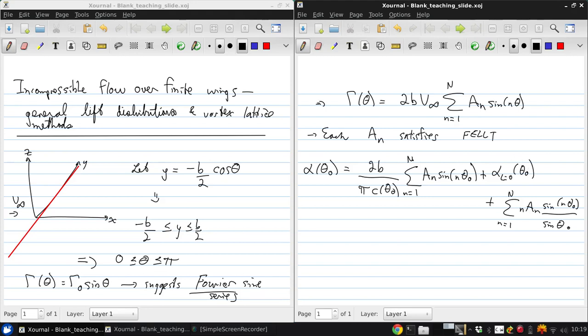So the unknowns in this equation are the n coefficients a sub n.